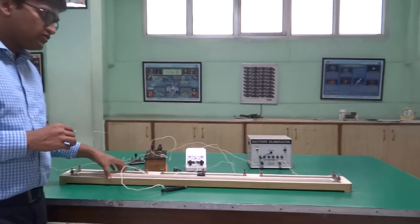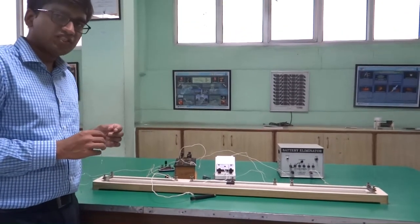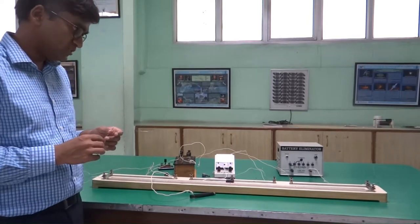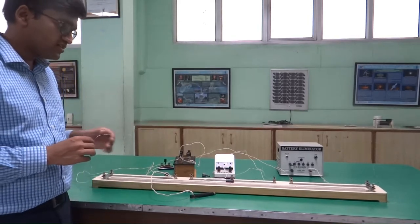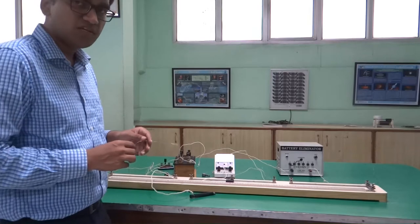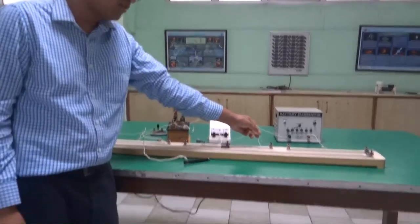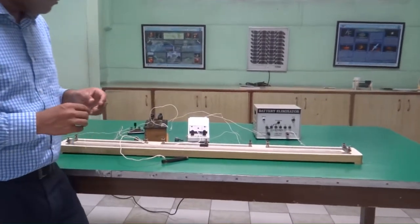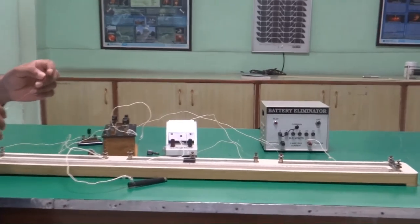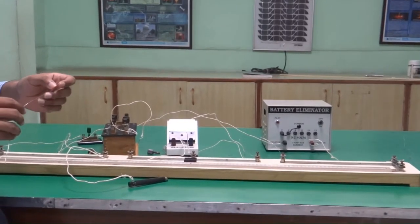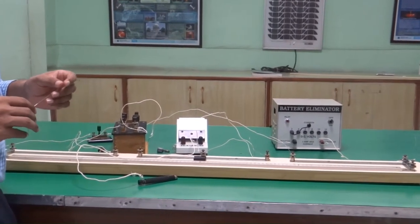Now we will talk about the third set of experiments which can be done using a meter bridge. As you can see right now, this is the same setup as we were using to determine the unknown resistance of a given wire. Now, we will be performing an experiment to verify the series and parallel combination of resistances.